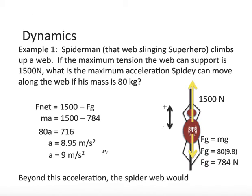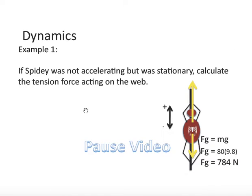So, beyond this acceleration, the spider web would snap. Now, what if the superhero was not accelerating, but was just hanging there, just stationary? What would the tension force be, acting on the web? Please pause video now. All right, I hope you gave this some thought.